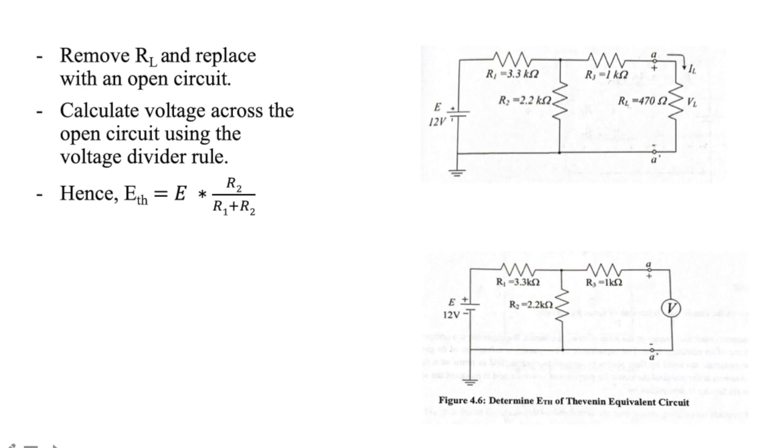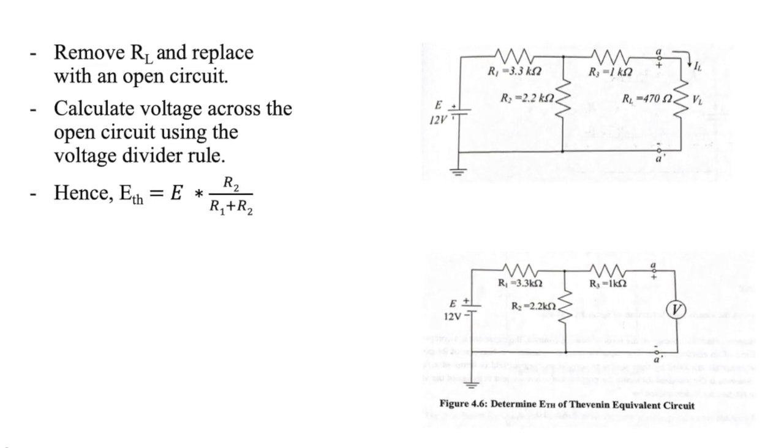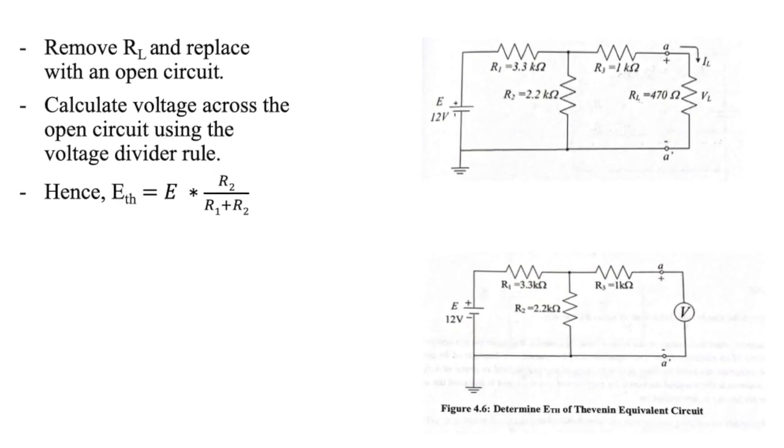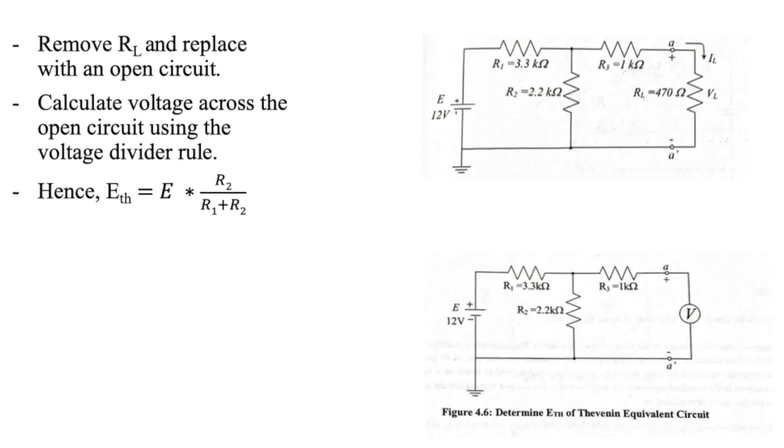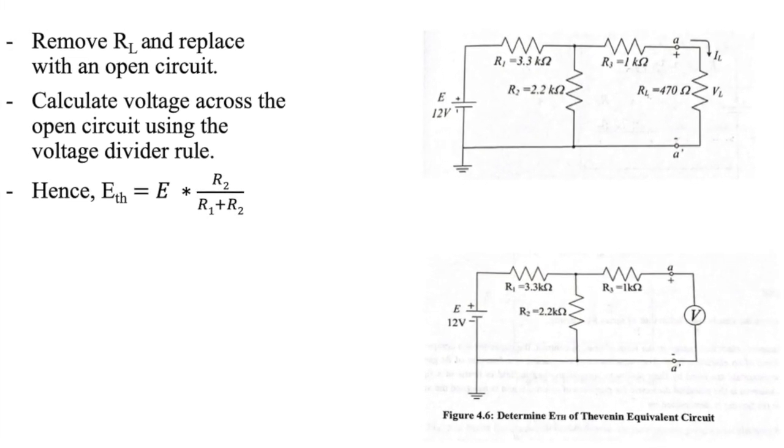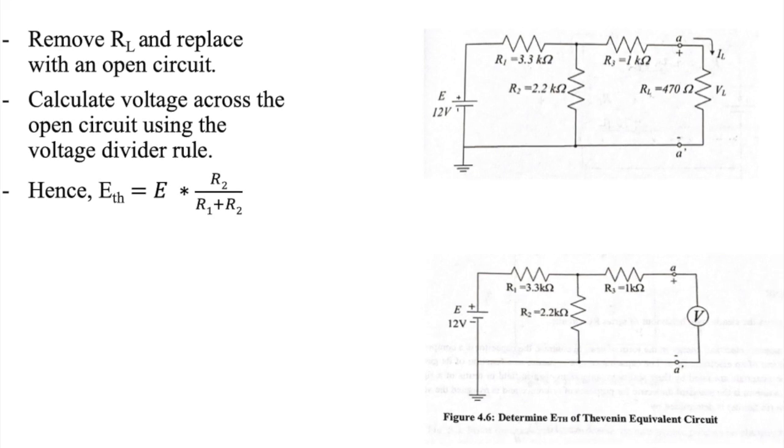For this circuit, we can calculate the voltage across this open connection using the voltage divider rule. Hence, E Thevenin is equal to the source voltage E multiplied by R2 all over R1 plus R2.